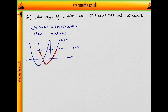We also want that x squared plus 3x plus 2 is strictly positive, so that's going to be all values of x over here. Starting with x squared plus 3x plus 2: when is it strictly positive? That's when x is strictly less than minus 2, and x is strictly greater than minus 1.